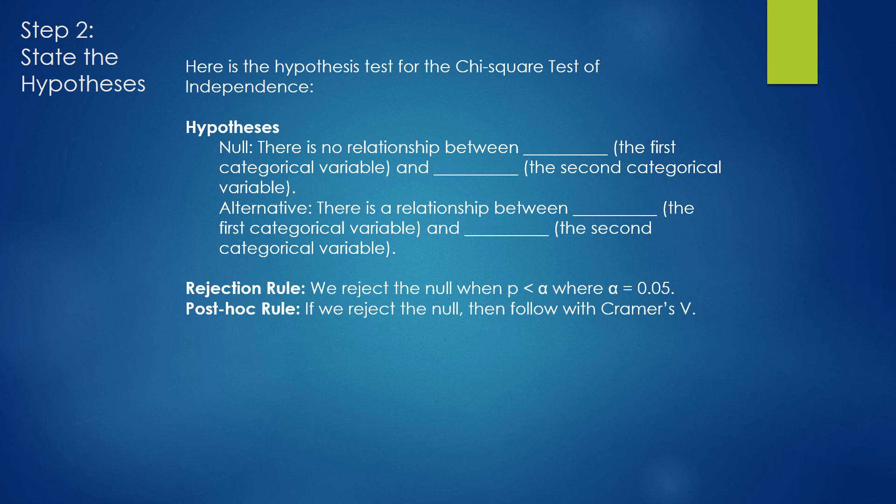We also have the usual rejection rule. If p is less than alpha or alpha is 0.05, we reject the null hypothesis. If p is greater than alpha, we fail to reject the null hypothesis. However, there is one special rule for this test. If we do reject the null, if p is less than alpha, then we have to follow up with a measure of Cramer's V.